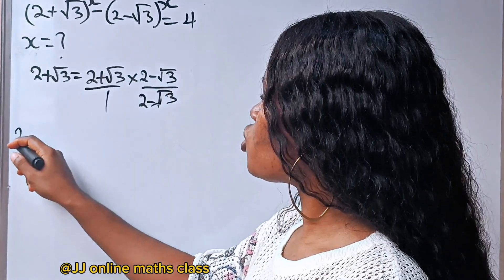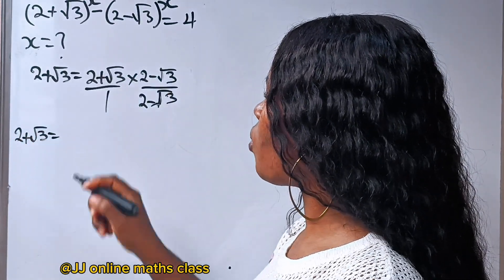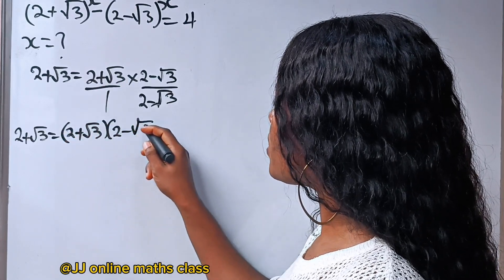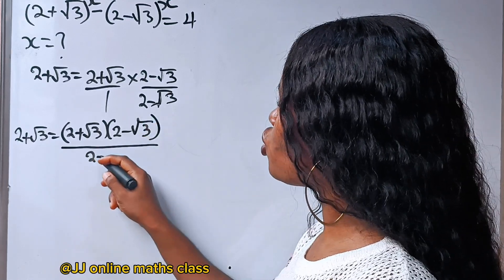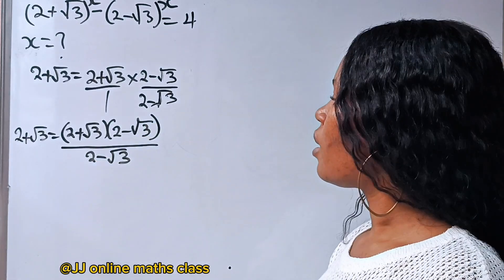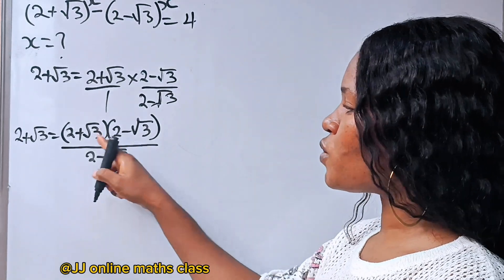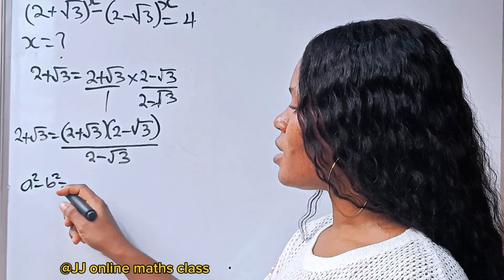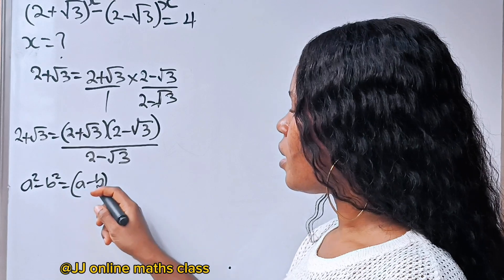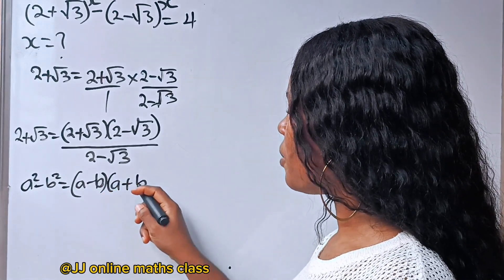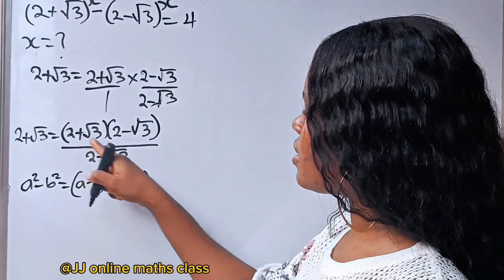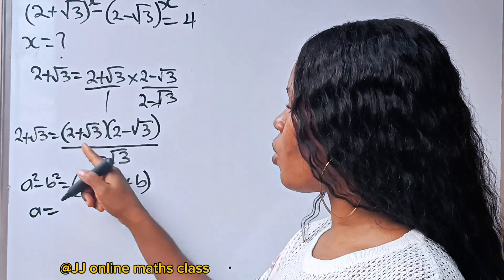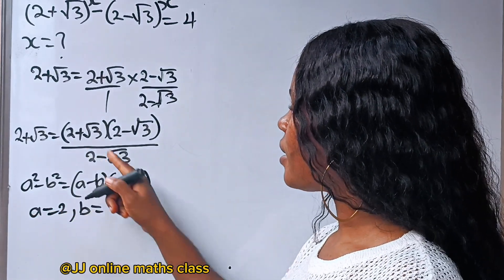We have that 2 plus root 3 is equal to 2 plus root 3 multiplied by 2 minus root 3, divided by 2 minus root 3. We have difference of two squares here, because according to this identity, a squared minus b squared is equal to a minus b multiplied by a plus b. That means this is already in this form. In this case, our a is equal to 2 and our b is equal to root 3.